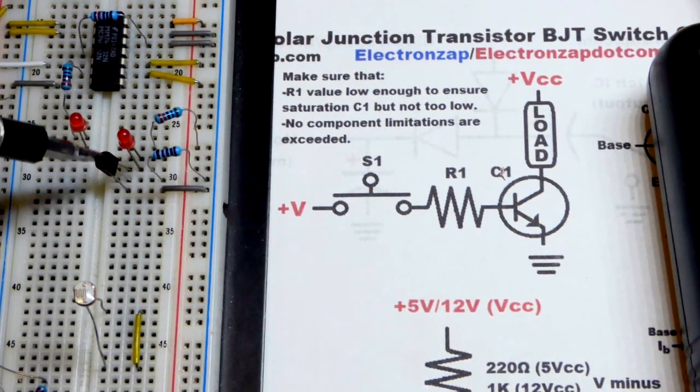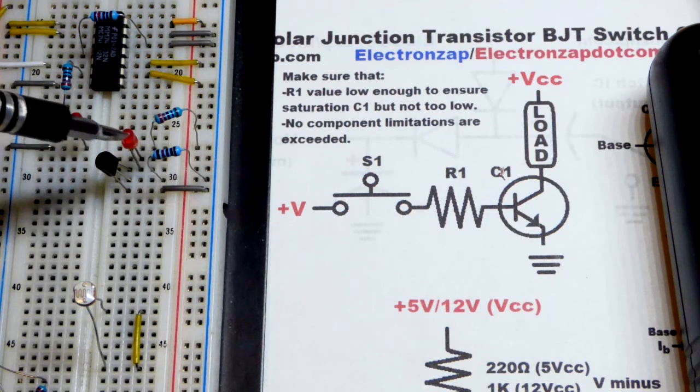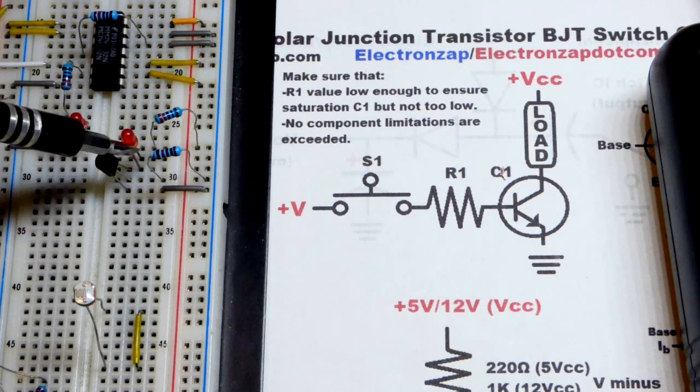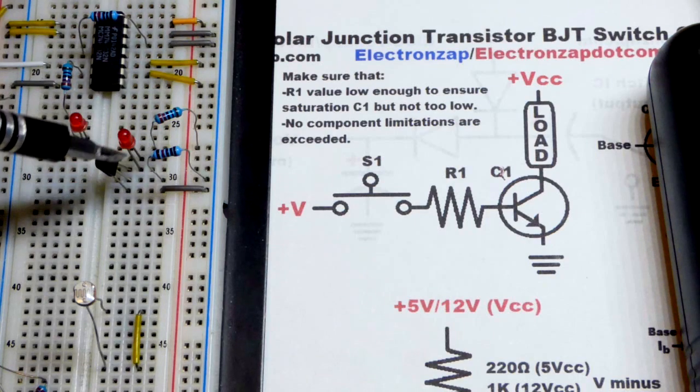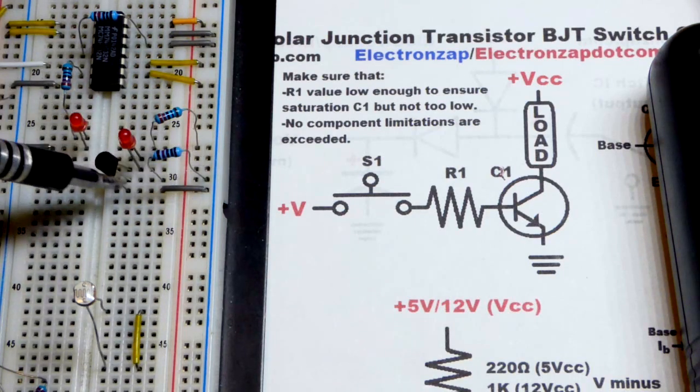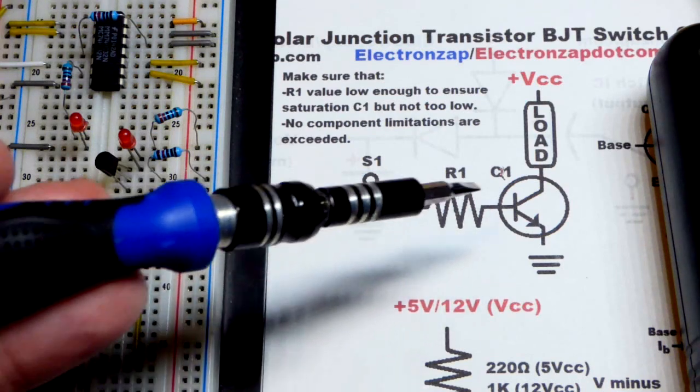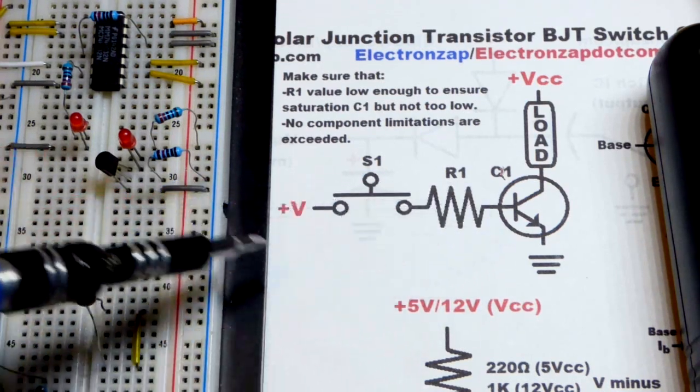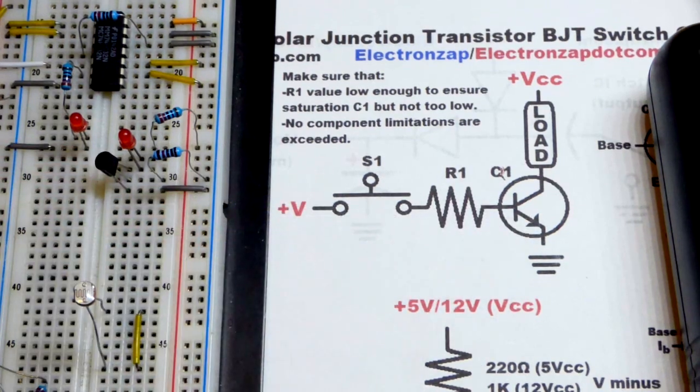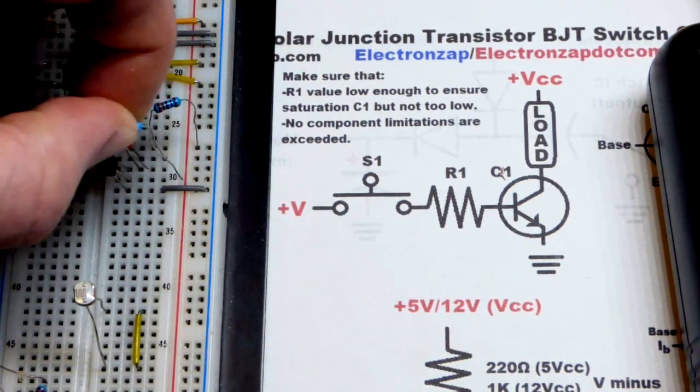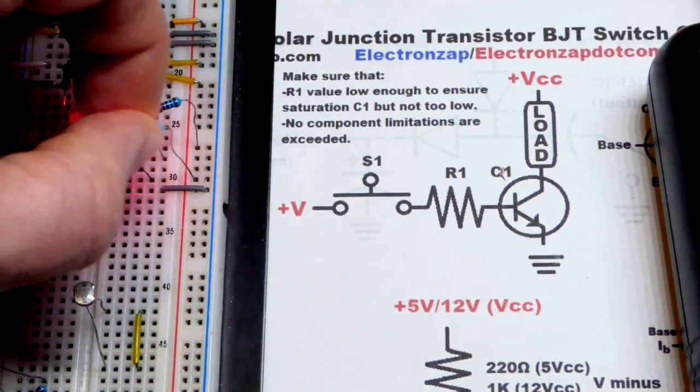And here's the NPN bipolar junction transistor. This is a 2N3904, collector on top where the cathode of the LED is, base to that resistor going to the negative rail and then emitter to the negative rail. Since we do not have more than 0.7 volts at the base, we have zero. With the resistor, it's off. If I shift this over, then it turns on. So basic switch stuff.